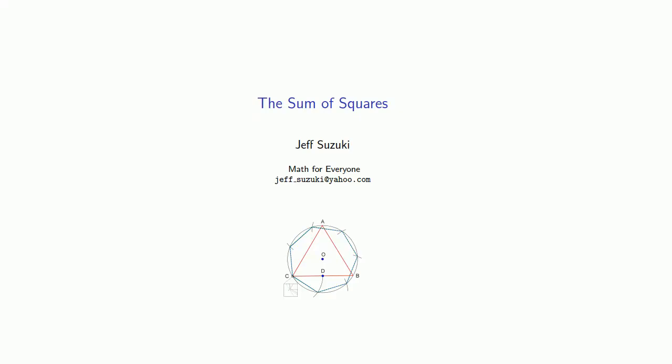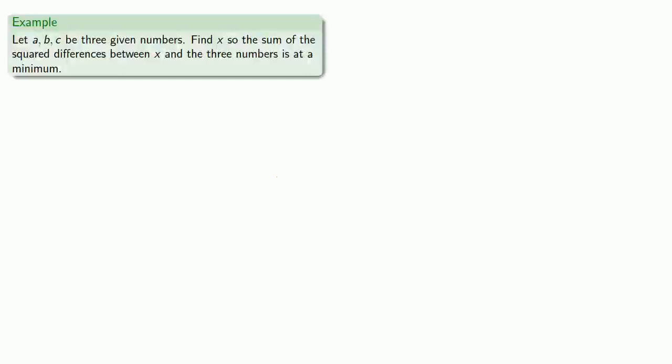One particularly important result comes from the following optimization problem: minimize the sum of the squares of the differences. Suppose I have three given numbers. I want to find a value x so the sum of the squared differences between x and the three numbers is at a minimum.